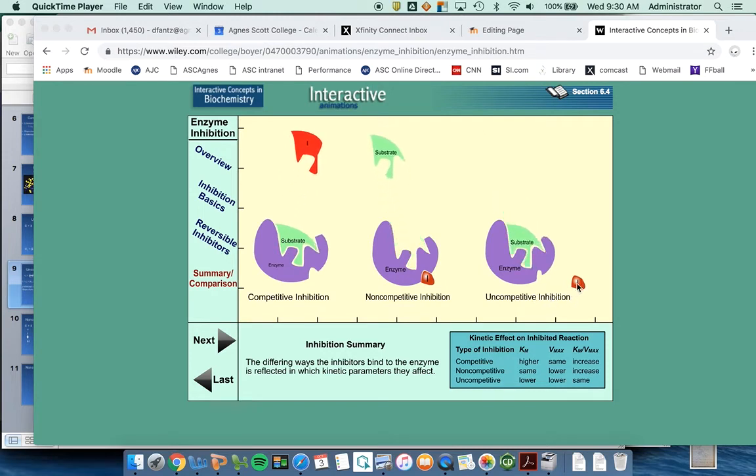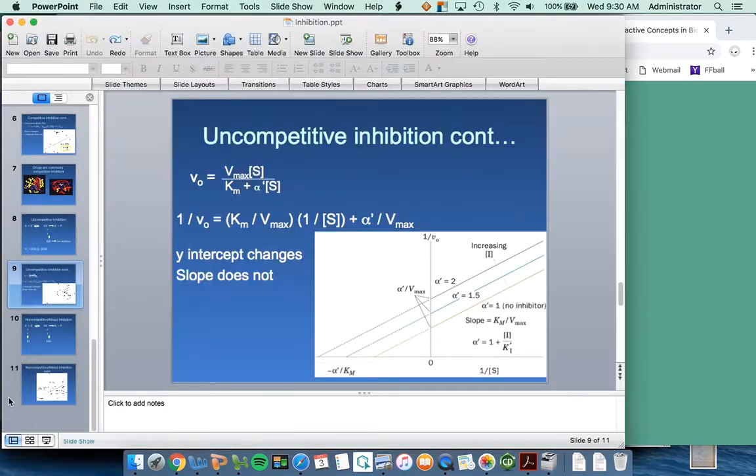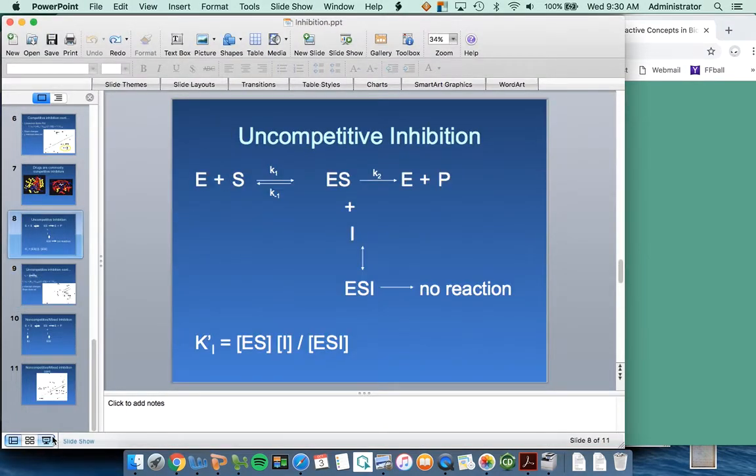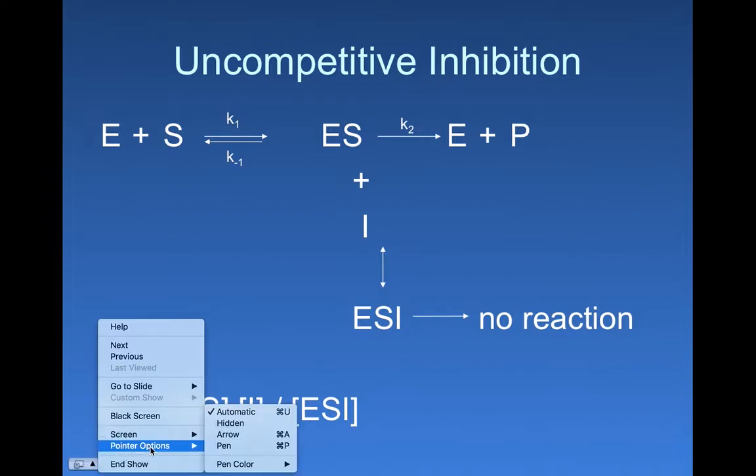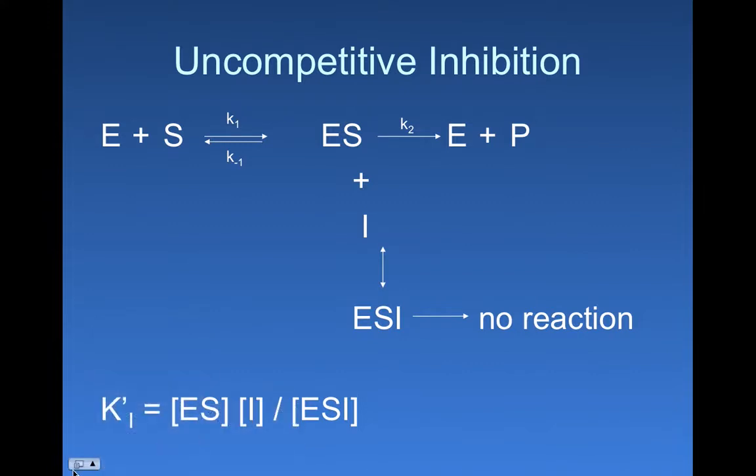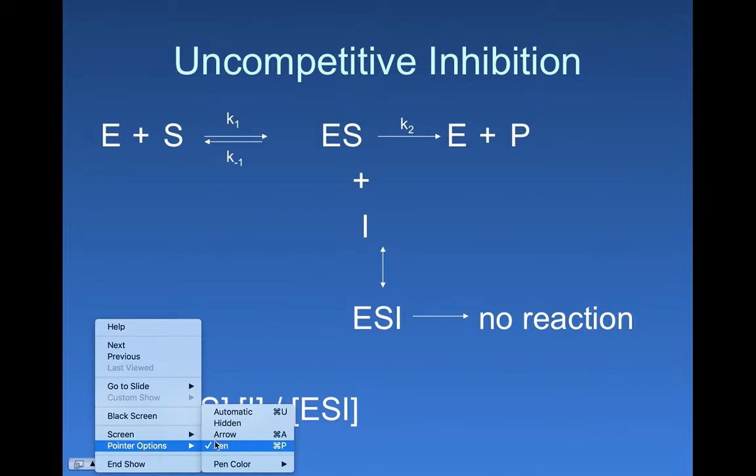Let's remind ourselves that the uncompetitive inhibitor is only able to bind to the enzyme substrate complex. It is not able to bind to the free enzyme, but once the substrate binds, this binding pocket forms for the inhibitor. Now let's look and see how that uncompetitive inhibitor interacts with our Michaelis-Menten equation and how it changes KM and Vmax.